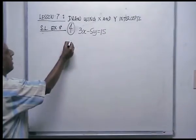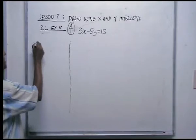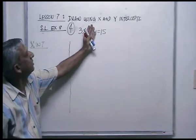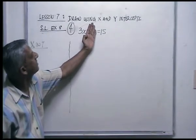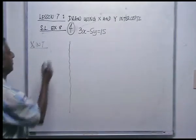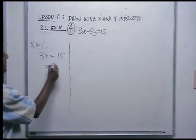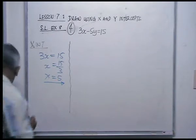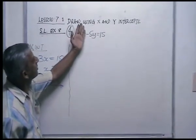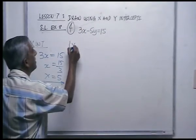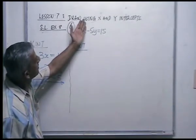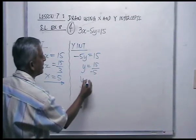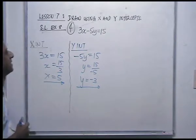For number 4, 3x minus 5y equals 15: for the x-intercept, put y equal to 0, so 3x equals 15, giving x equals 5. For the y-intercept, put x equal to 0, so minus 5y equals 15, giving y equals 15 divided by minus 5, which is y equals minus 3. So the x-intercept is 5 and the y-intercept is minus 3.